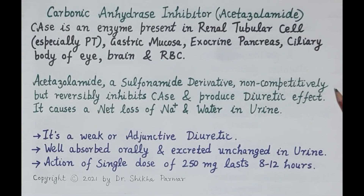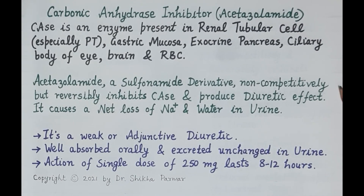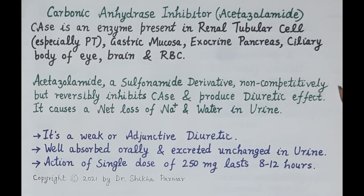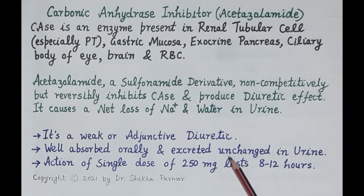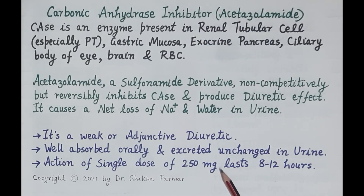Acetazolamide is a sulfonamide derivative that non-competitively but reversibly inhibits carbonic anhydrase, producing a diuretic effect by causing net loss of sodium and water in urine. It is a weak diuretic and is therefore used as an adjuvant or additional diuretic. It is well absorbed orally and excreted unchanged in urine. The action of a single dose of 250 mg lasts about 8 to 12 hours.